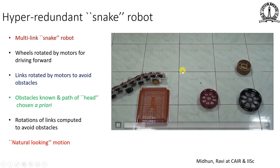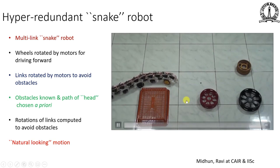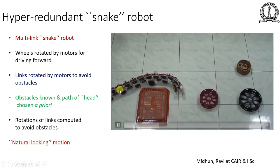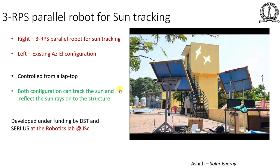As the head of the snake robot moves to avoid an obstacle and navigate through a path, the rest of the body remains straight, giving it a very natural-looking motion.